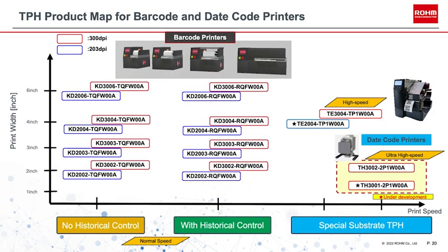Here is Roam's product map of thermal print heads for large barcode and date code printers. We offer products with print widths from 2 to 6 inches. The first two columns show products with and without history control featuring the same structure. Thermal print heads without history control require the customer to manage history themselves, while those with history control incorporate the function into the print head, ideal for high-mix, low-volume products. We also offer the industry's fastest print head types for barcodes and ultra-high-speed types for date codes.